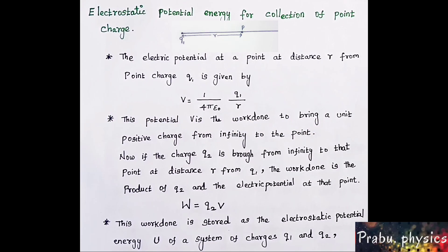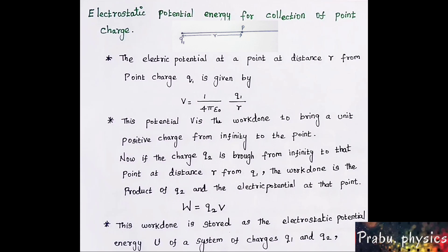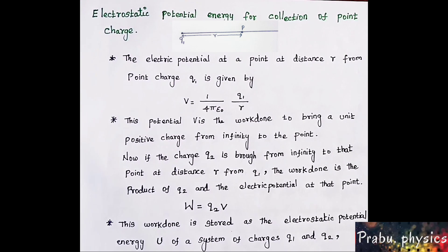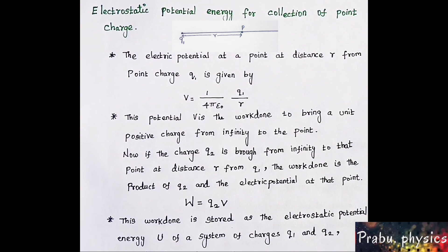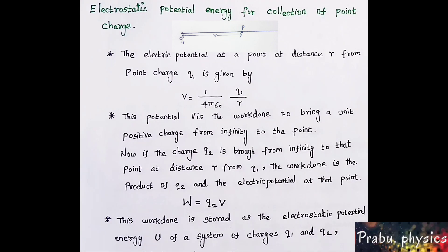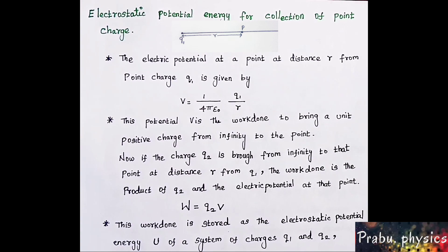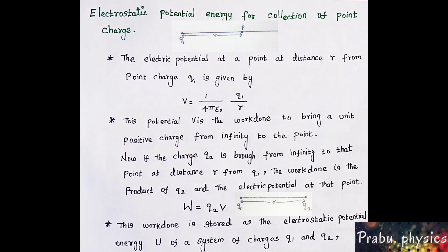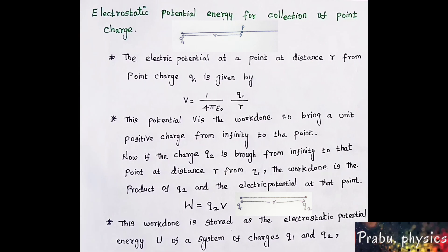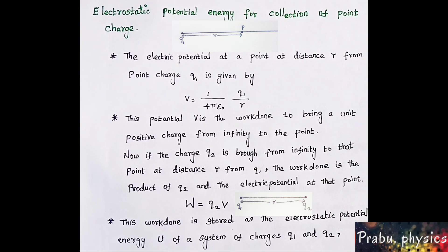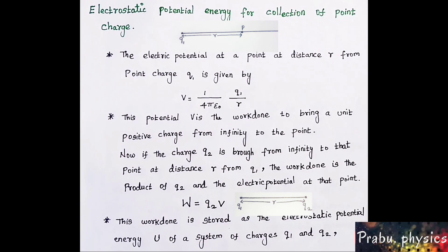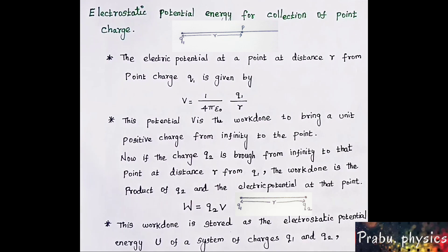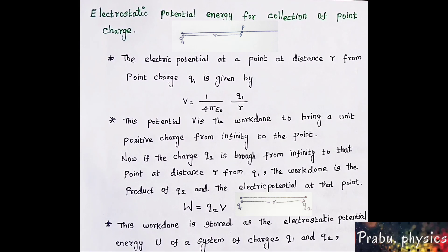Electrostatic Potential Energy for a Collection of Point Charges. The electric potential at a point at distance r from point charge q1 is given by V = (1/4πε)(q1/r). So if q1 is at a point and we look at point P at distance r from q1, the electric potential at that point is V = (1/4πε)(q1/r).